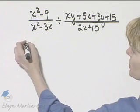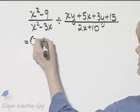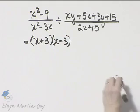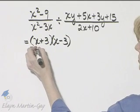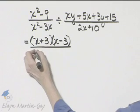So the first numerator, that's the difference of two squares. I can write that as x plus 3 times x minus 3. What about that first denominator? There's a common factor of x that I can factor out.